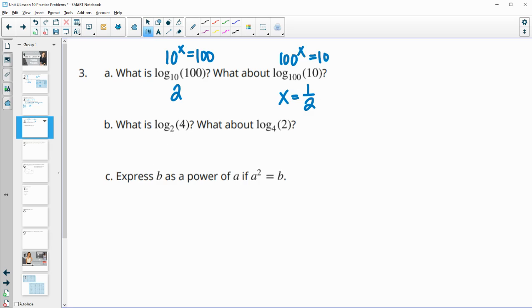So log base 2 of 4. So 2 squared is 4. And 4 to the 1/2 is 2. Or the square root of 4 is 2. Then in part C, it says express B as a power of A. But that's already what this is. It says B equals A squared. So that's already what this is, is B as a power of A.